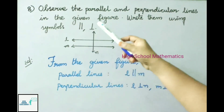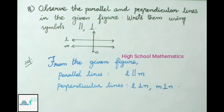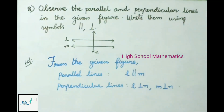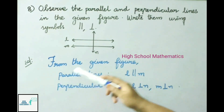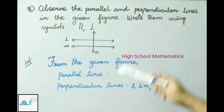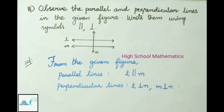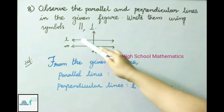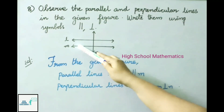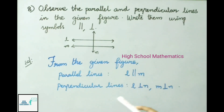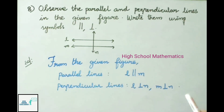Question 8: Observe the parallel and perpendicular lines in the given figure and write them using symbols. From the figure: parallel lines — L is parallel to M. Perpendicular lines — L is perpendicular to N, and M is perpendicular to N.